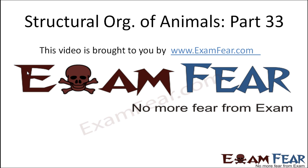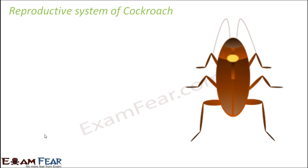This video on structural organization of animals part 33 is brought to you by examfear.com. We have come to the last topic on cockroach — the reproductive system. We previously covered how food is digested, how respiration happens, excretion, and circulation. Now one of the most important things is how cockroaches reproduce and increase their number.